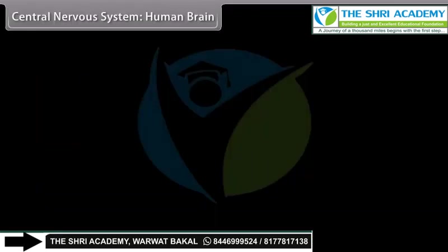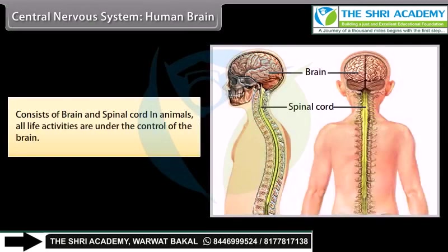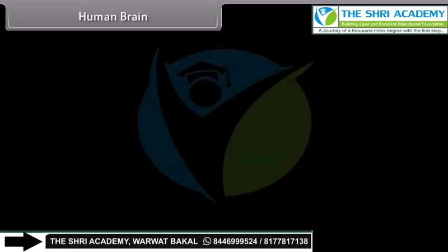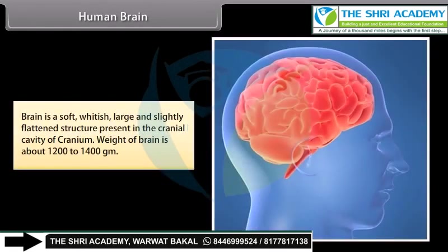The central nervous system consists of the brain and spinal cord. In animals, all life activities are under the control of the brain. The human brain is a soft, whitish, large, and slightly flattened structure present in the cranial cavity of the cranium. The weight of the brain is about 1200 to 1400 grams.